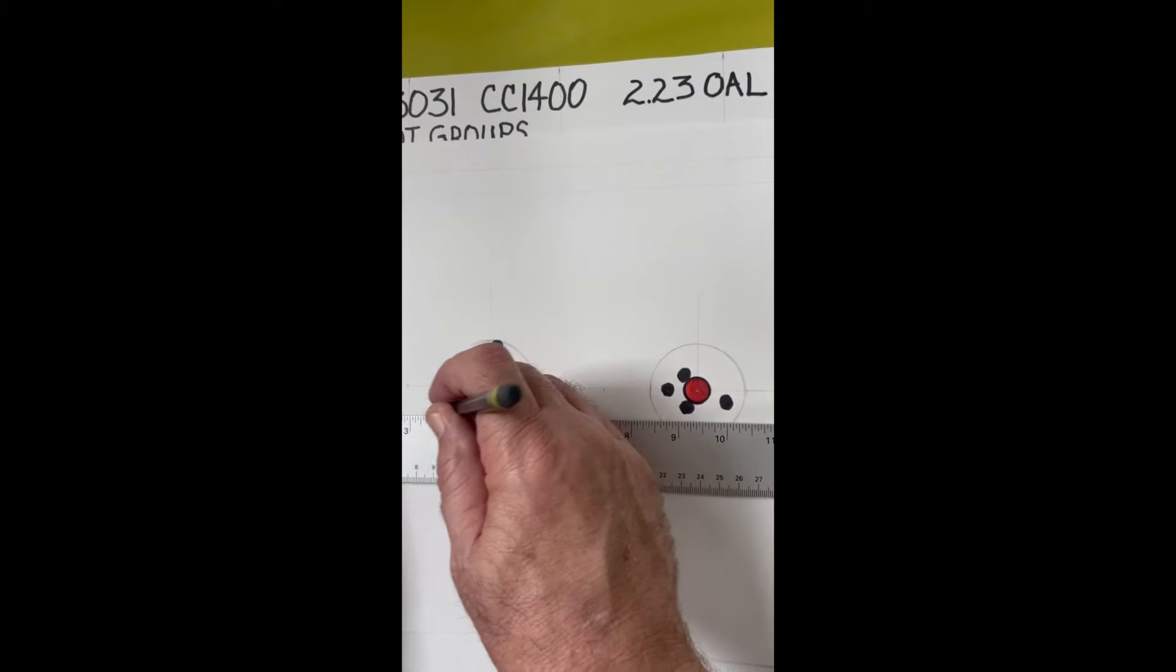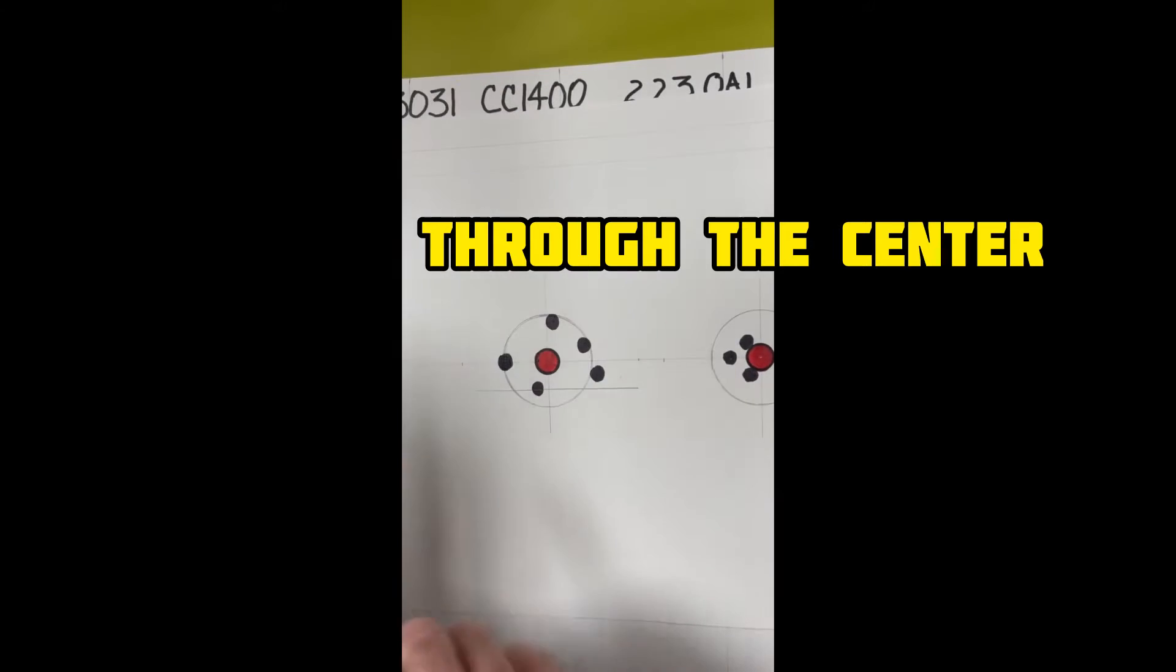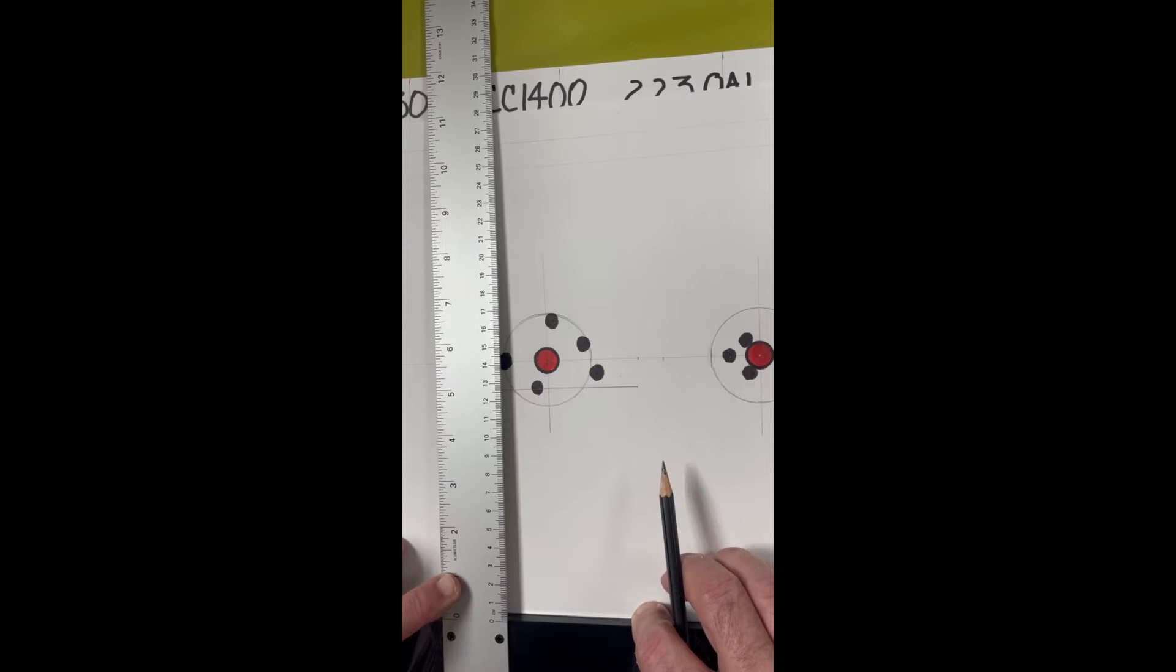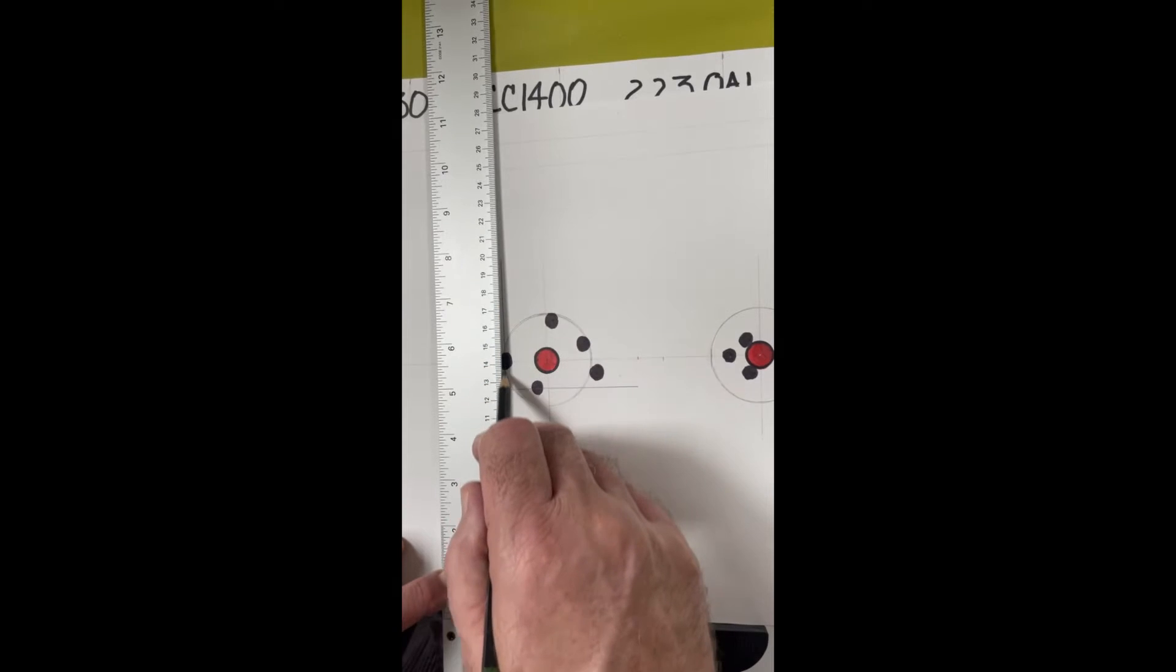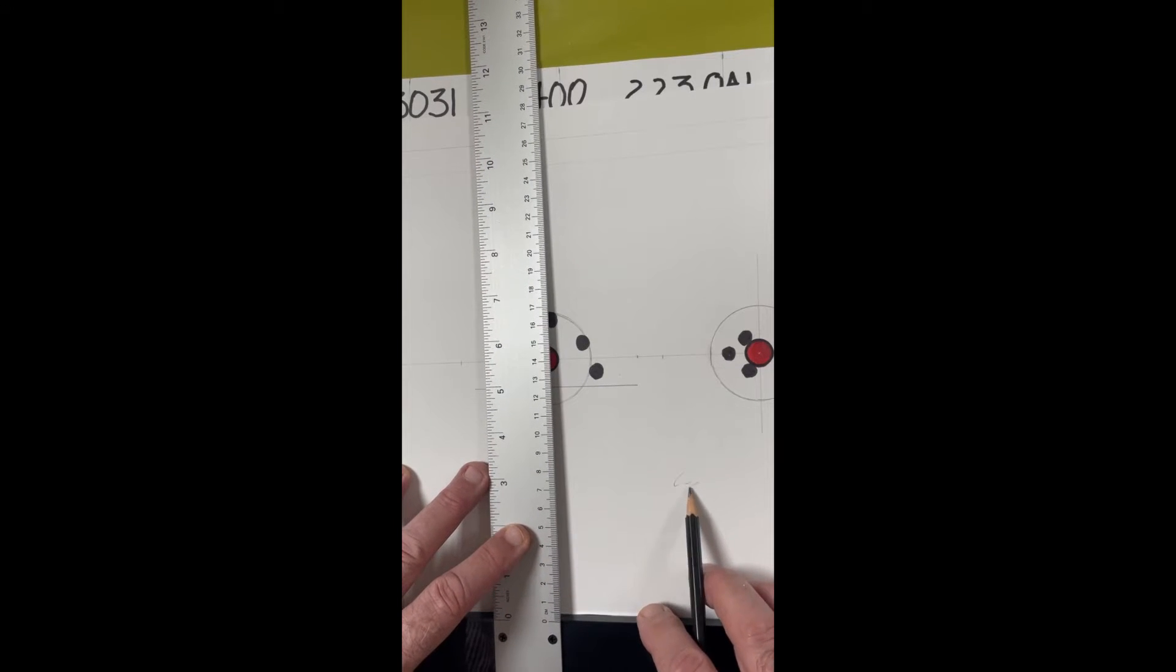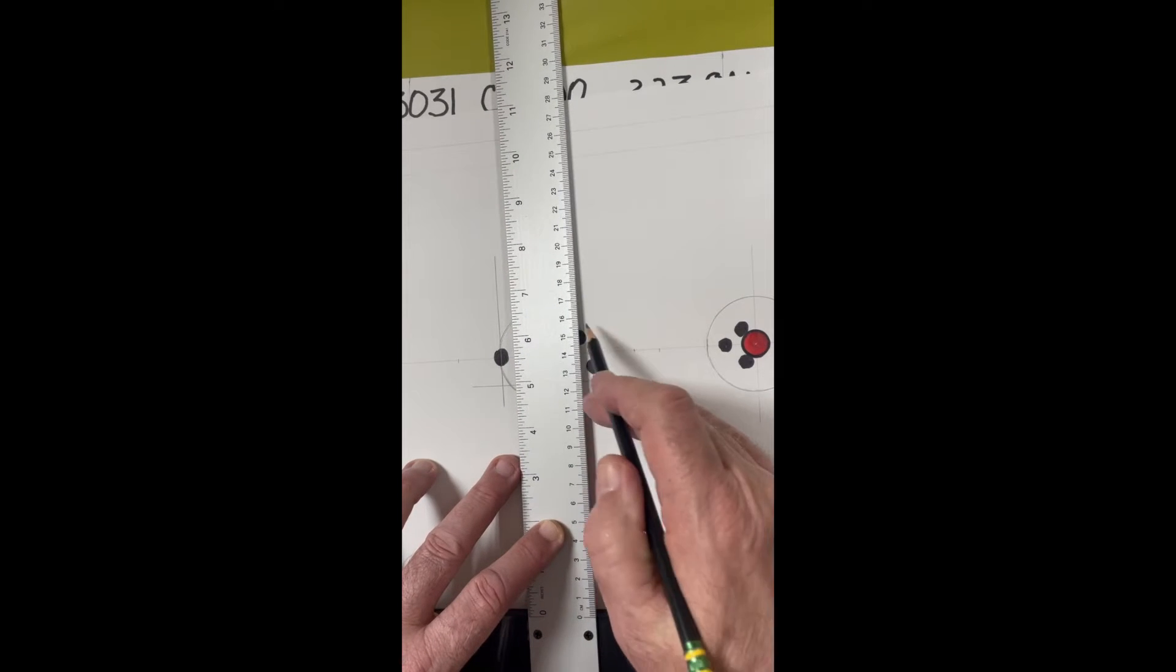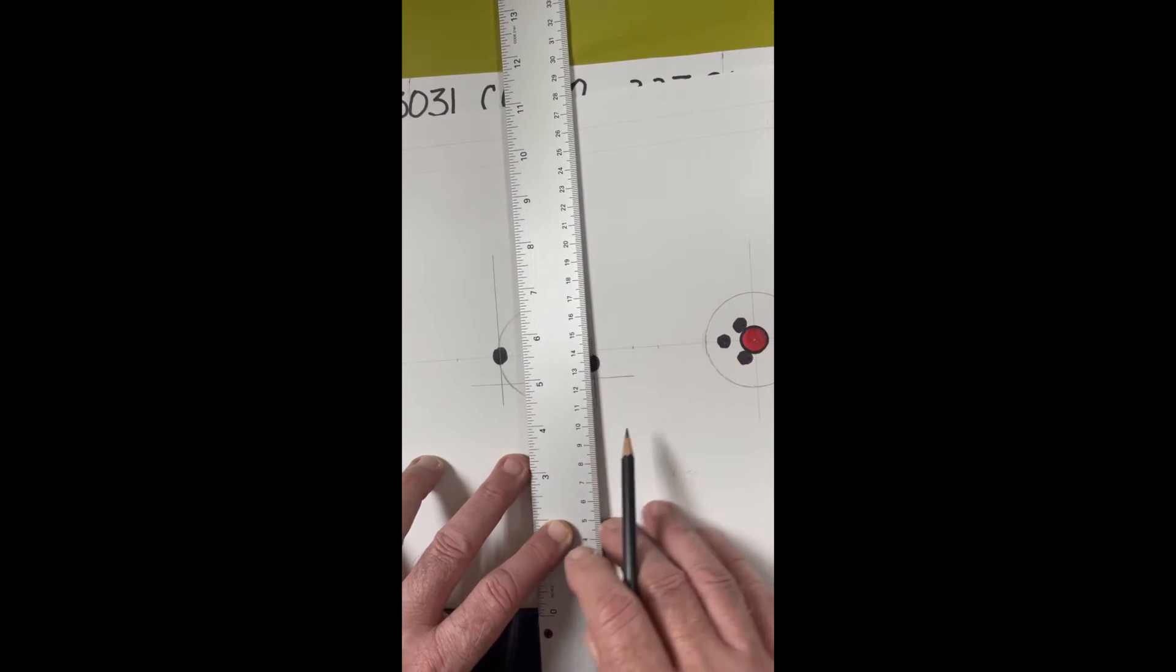We're going to have a zero right here by drawing a line through the lowest shot on the group, and then we're going to have another zero. That's our vertical zero. Our horizontal zero is going to be right here, because that's the furthest most shot to the left. Then we're going to measure the vertical distance to each. From the center of the group to zero, we're going to measure that.